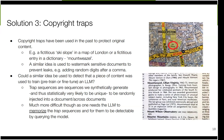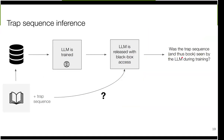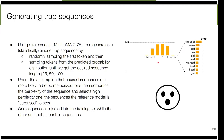We leverage prior work on privacy and extraction attacks against LLMs, but for a very different task: copyright detection — detecting that a piece of content was seen during training. The goal is not extracting the next token but detecting that a sequence was seen during training. Content is marked with a trap sequence, and the question is: once the LLM is released with black-box access, can we detect whether the trap sequence — and thus the book — was seen by the large language model during training?